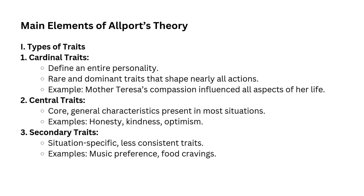Allport classified traits into three categories: cardinal traits, central traits, and secondary traits. Cardinal traits are rare and exceptionally dominant — they define a person's entire personality and shape almost everything they do. If someone has a cardinal trait, it becomes their defining characteristic. A famous example is Mother Teresa, whose compassion was her cardinal trait. It influenced nearly all aspects of her life, from her work with the poor to her day-to-day actions. Everything she did was driven by her deep sense of compassion.